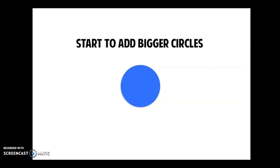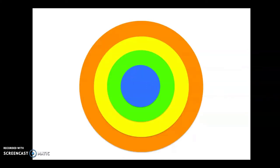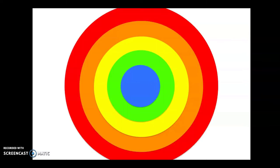Now I'm going to start to add bigger circles around that small circle. So I have a green circle, a yellow circle, a bigger orange circle, and an even bigger red circle.